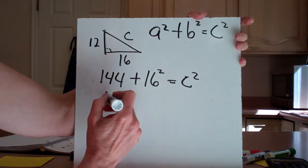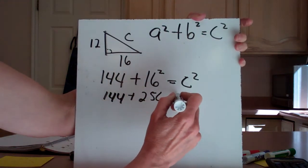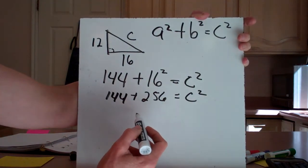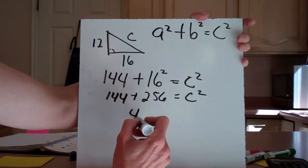So now we have 144 plus 256 equals C squared. I'll plug these numbers into my calculator: 144 plus 256 equals 400.